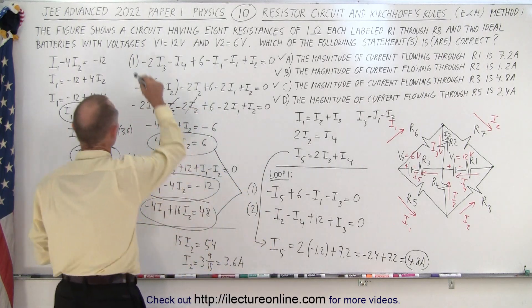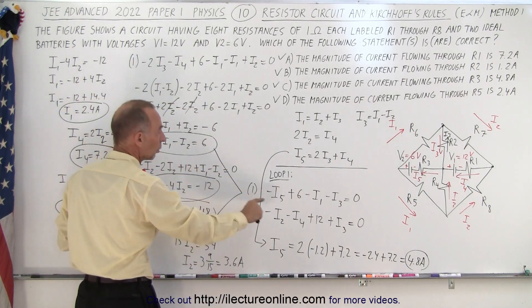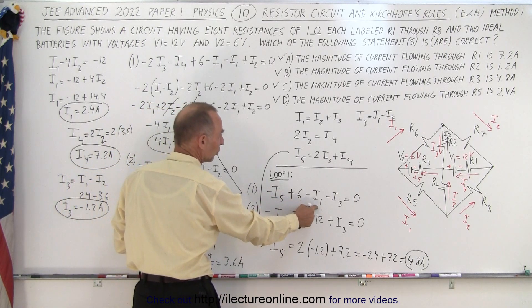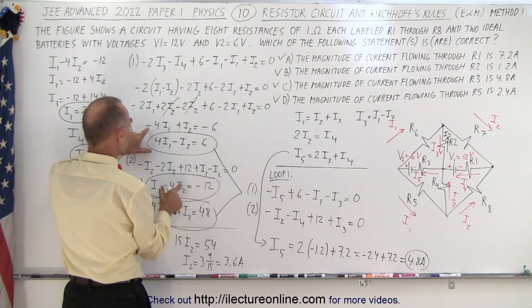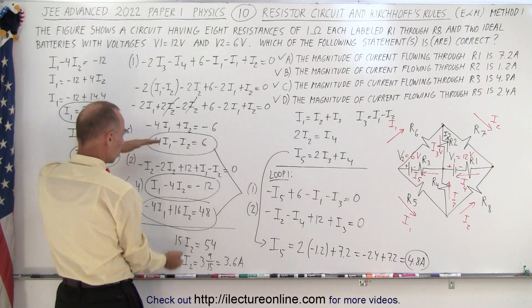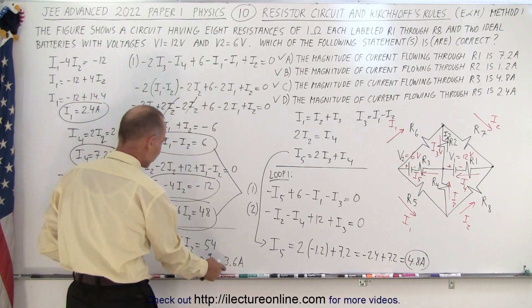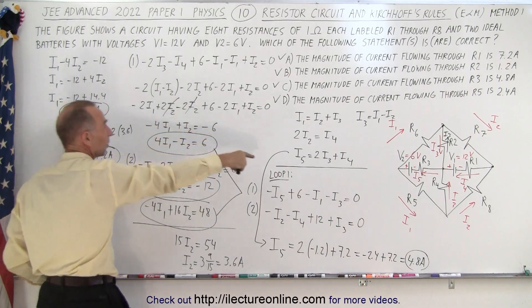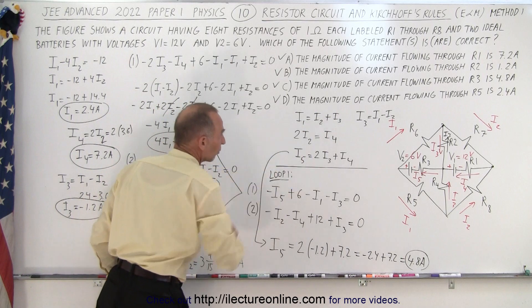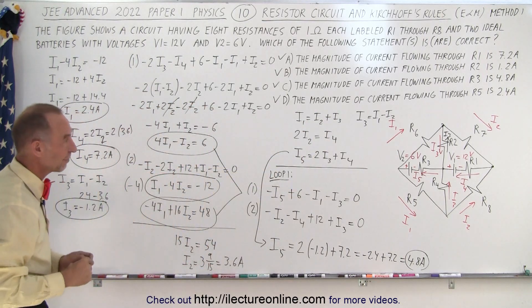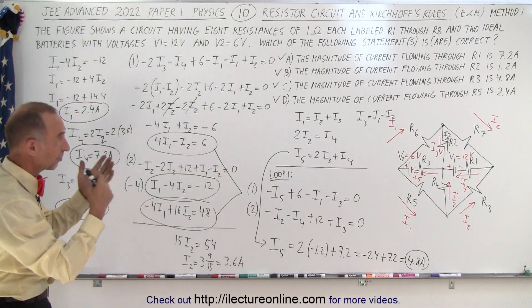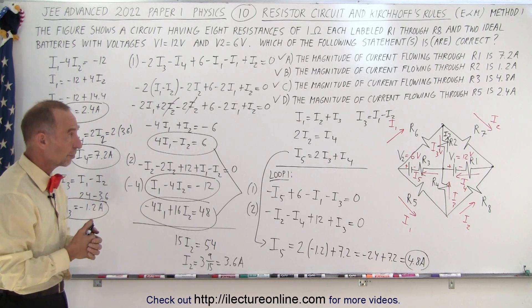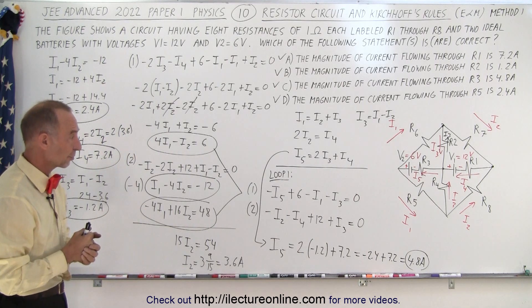Then we simplify those equations by replacing all currents greater than I1 and I2 to end up with two equations that only have I1 and I2 in them. We solve them simultaneously to solve for I2. We then solve for I1, which is one of the answers. And then, of course, using these three equations right here, we solve for I3, I4, and I5. And it turns out that in this case, all five currents are legitimate. They're correct. And so therefore, all four answers need to be answered correct.